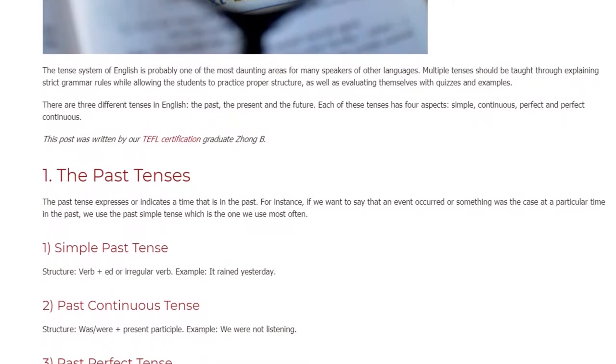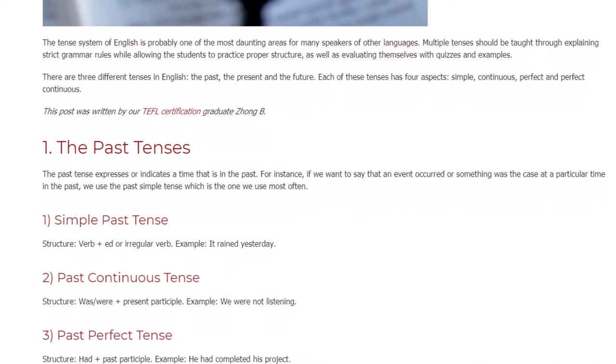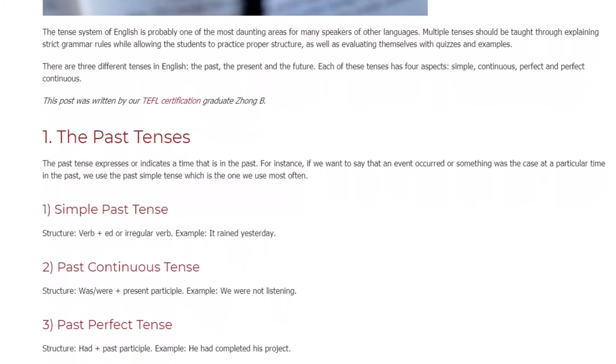1. Simple Past Tense. Structure: Verb plus -ed or Irregular Verb. Example: It rained yesterday.